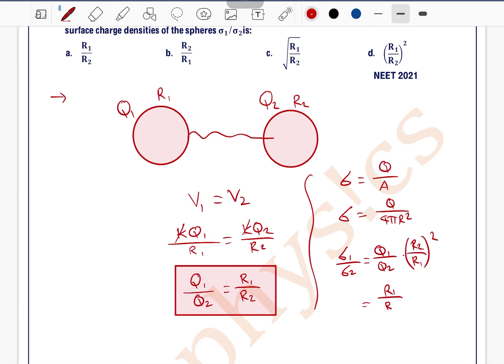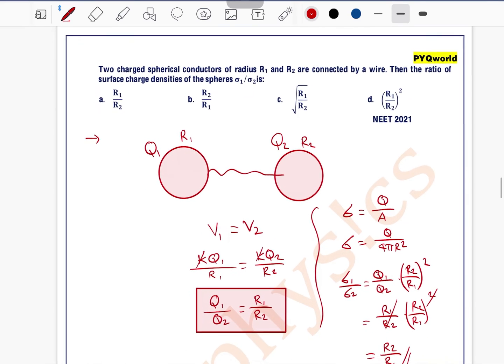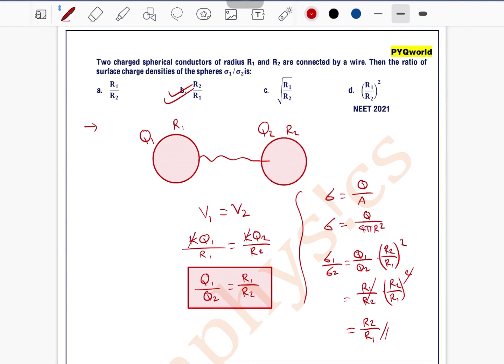So q1 by q2 is r1 by r2 into r2 by r1 squared. This r2 by r1 gets canceled out, remains r2 squared divided by r1, so r2 by r1. Option b is the correct one.